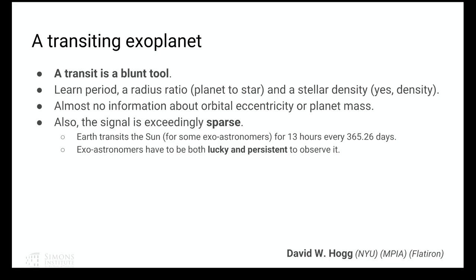In the transiting case we basically just learn the stellar density, which is a little odd, and we get no information really about the orbit beyond that — no eccentricity or anything like that. The signal is unbelievably sparse, which is problematic observationally. If you wanted to make a really adaptive system to find transits, there's a lot of trouble because the system is so sparse. The Earth transits the sun for 13 hours every 365.25 days — you have to be very lucky to observe it and very persistent, staring continuously with good time resolution.